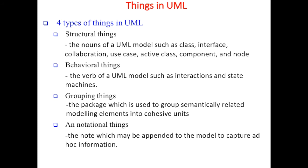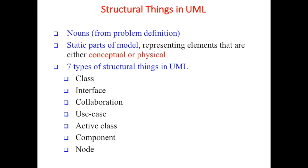Another type is grouping things - the package, which is used to group related model elements in a cohesive unit. If they are related to each other, they will be created in one group. For example, if we have similar color shoes, we package them in one box. And finally, notational things - the note, which may be appended to the model to capture additional ad hoc information.